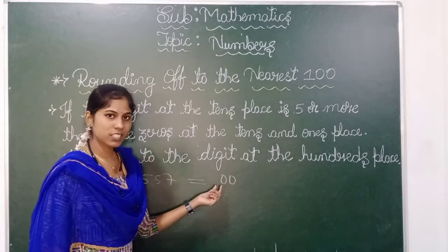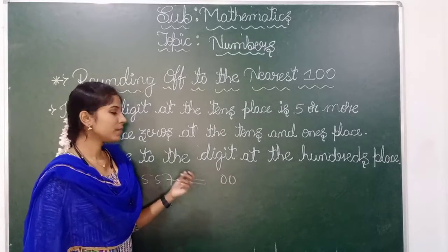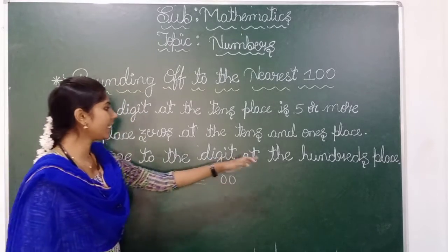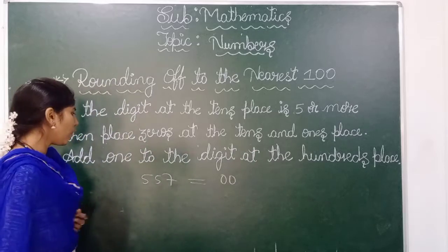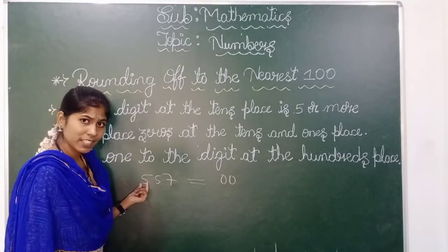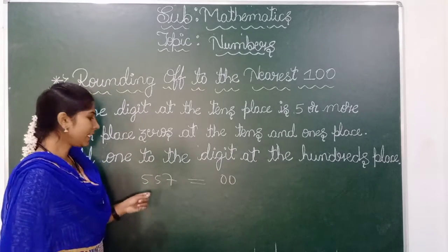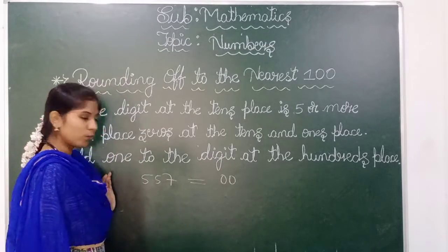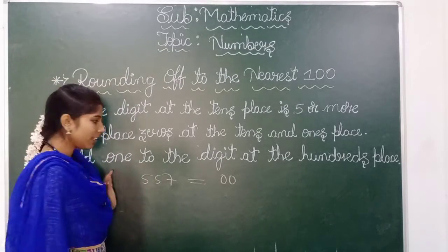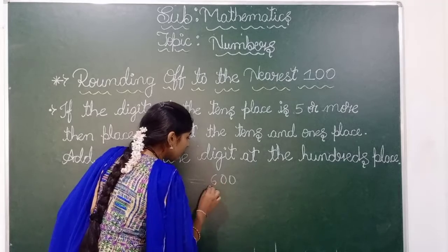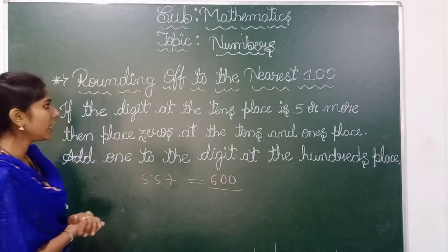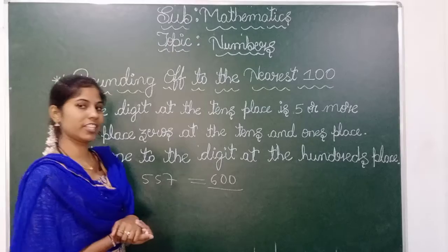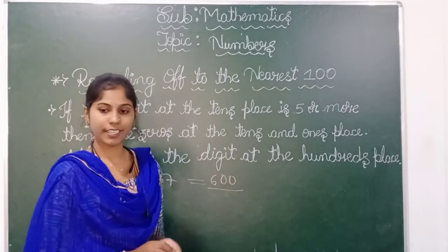The ones and tens places become zero, and add one to the digit at the hundreds place. So what is the digit at the hundreds place? The digit at the hundreds place is five. So just add one to the five — that becomes six. So the rounding off of 557 to the nearest hundred is 600.